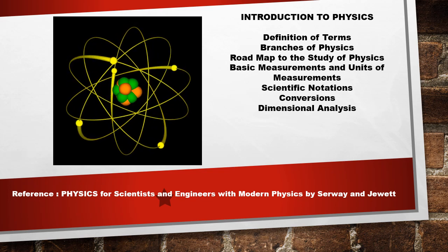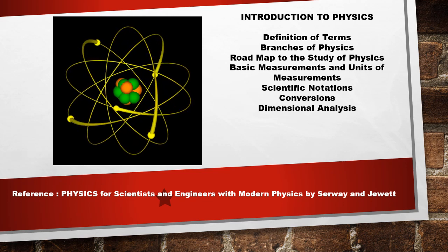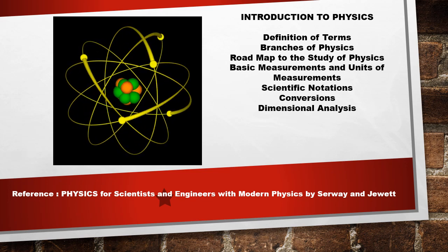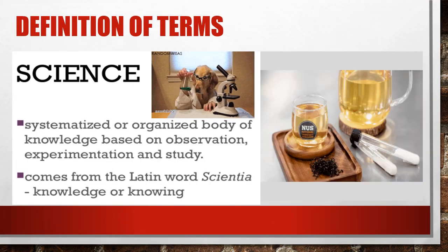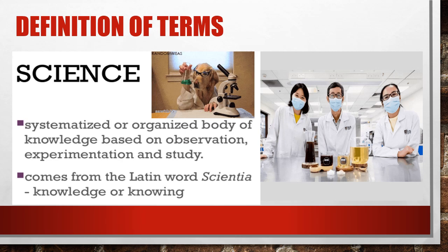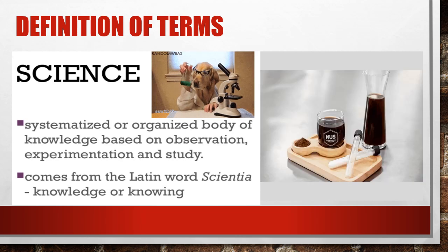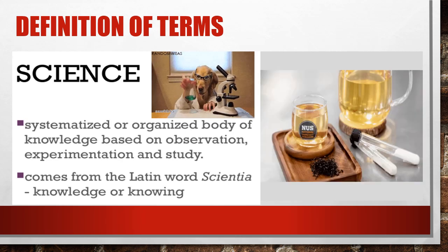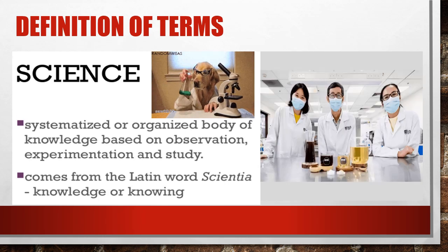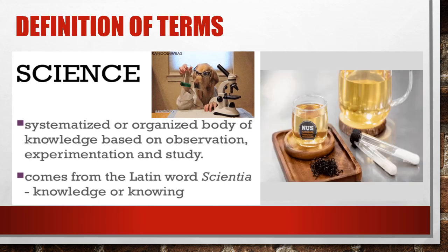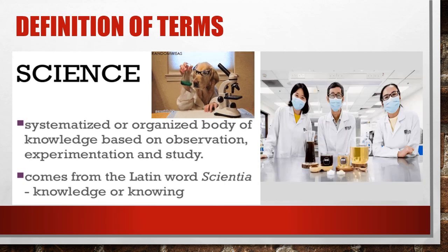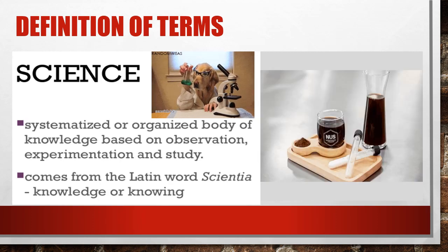We are referencing Physics for Scientists and Engineers with Modern Physics by Serway and Jewett. First up, we go to the definition of terms. What is science? Science is a systematized or organized body of knowledge based on observation, experimentation, and study. It comes from the Latin word 'scientia,' meaning knowledge or knowing.